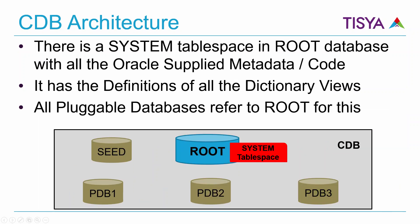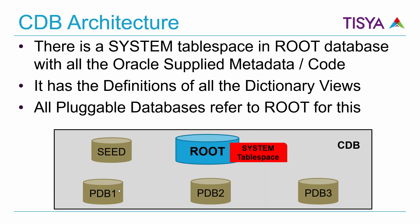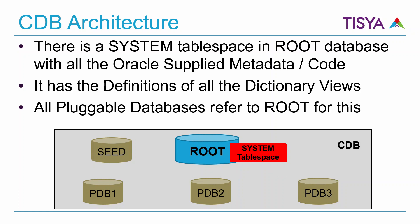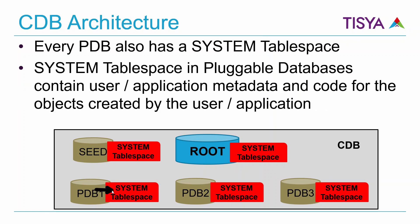Looking at the system tablespace, every root comes with its own system tablespace, very similar to the standard system tablespace in a non-CDB database, where Oracle-supplied metadata, code, and the dictionary all reside. All pluggable databases refer to the root's system tablespace for this Oracle-supplied code base. Each pluggable database also has its own individual system tablespace, where metadata and code for user-created or application-created objects are kept.